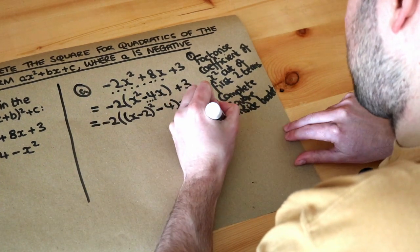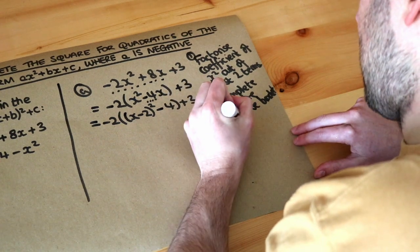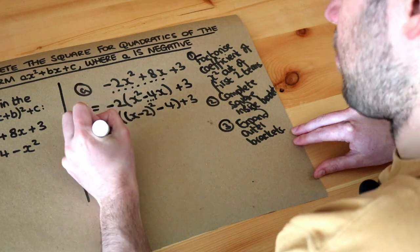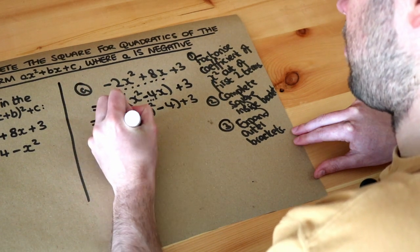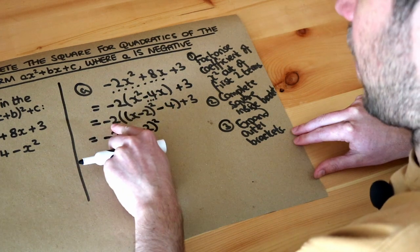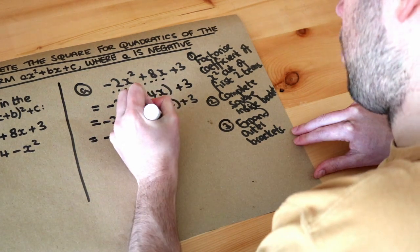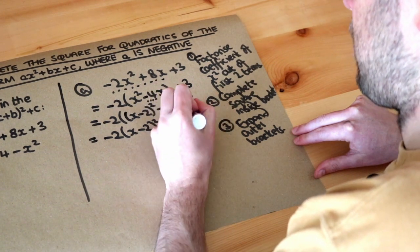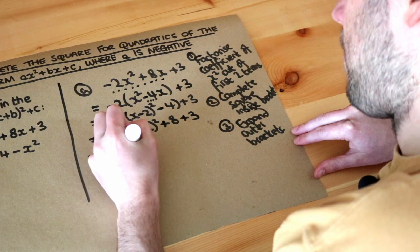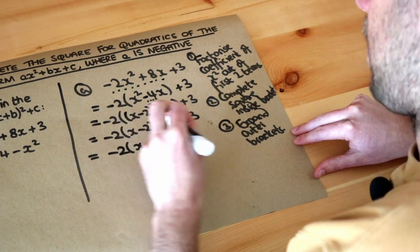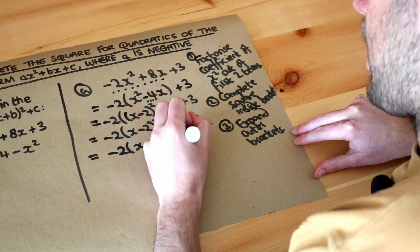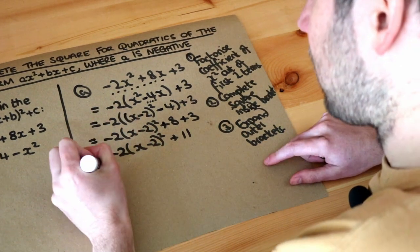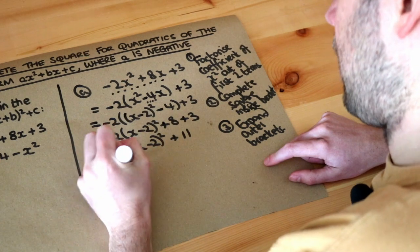The final step is to expand the outer brackets. We do minus 2 times (x minus 2) squared, which gives minus 2(x minus 2) squared. Then minus 2 times minus 4 is positive 8, and we've still got that plus 3 outside the brackets. Tidying up, 8 plus 3 gives 11. It might be nicer to put the positive term first, so we write 11 minus 2(x minus 2) squared.